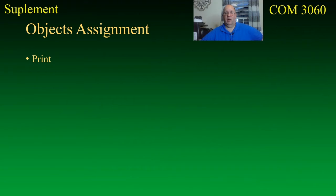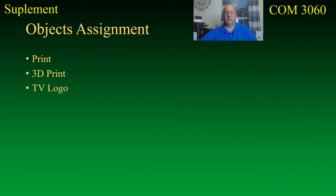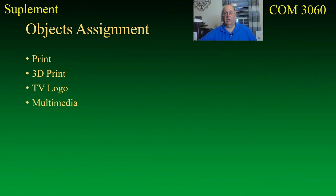The first option is print — a print object uses 3D graphics for a 2D world of print, and there's a lot of potential there. The second is a 3D printed object, an actual three-dimensional physical object. You could also do a TV logo, which is an animation you'd see on television playing for a few seconds identifying a show or group. Finally, there's multimedia — something appearing on a cell phone, website, or as a skin for a video game character.